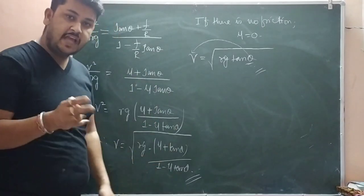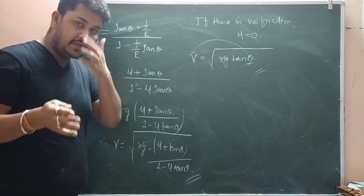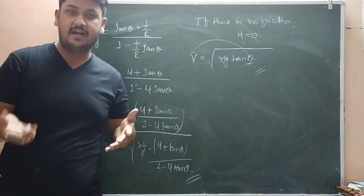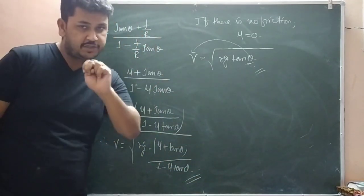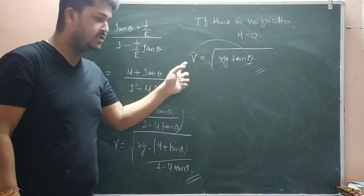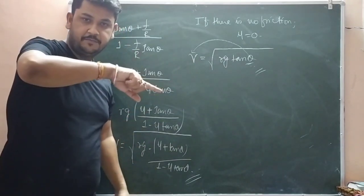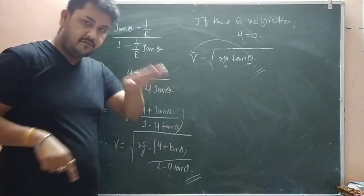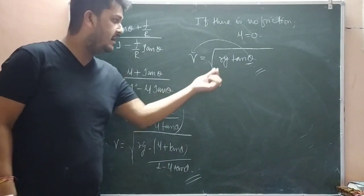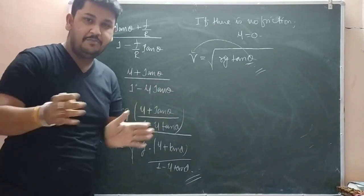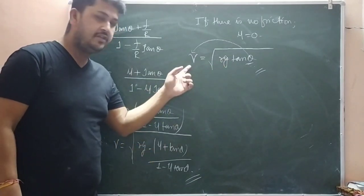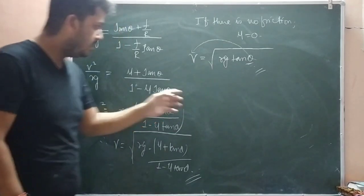Now a question comes: when a cyclist bends, how much will they bend? On which factors does it depend? This bending depends on two things: one, velocity. The higher the speed of the cycle, the more the bend will be, because it is directly proportional. Second, radius of the circular path. If the radius is large, less bending is needed. If radius is small, more bending is needed - inversely proportional. So it mainly depends on two things: velocity and radius of the circular path.